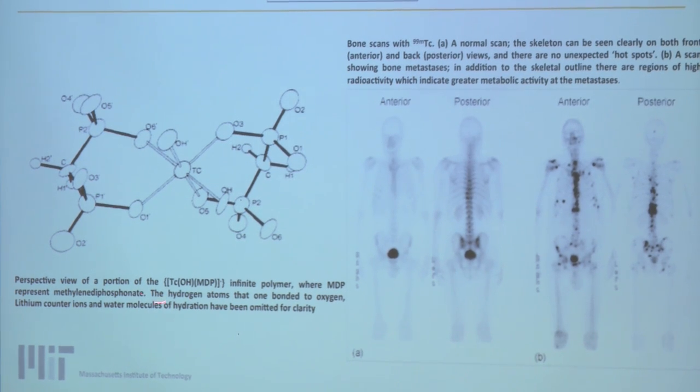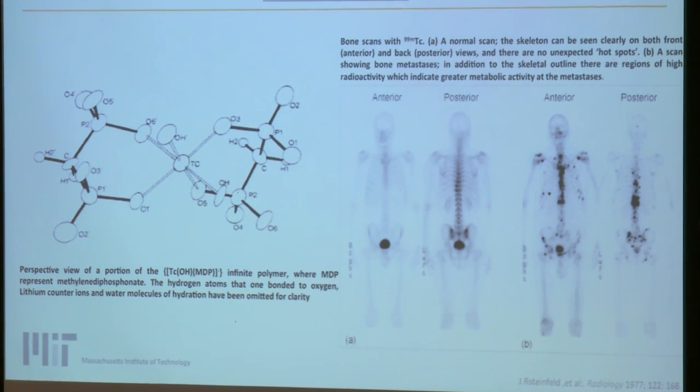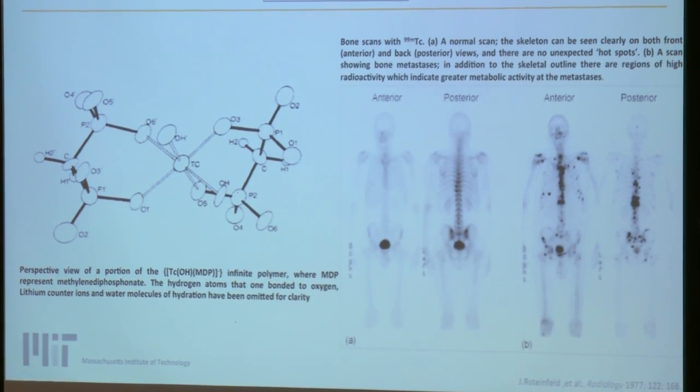The technetium-99M methylene diphosphonate has been approved as the most popular scanning agent. We can see in the figure A, normal scan for the skeleton can be seen clear from the front and the back, where B, scanning shows the bone metastasis as a hot spot. When I say bone metastasis, I mean bone cancer.